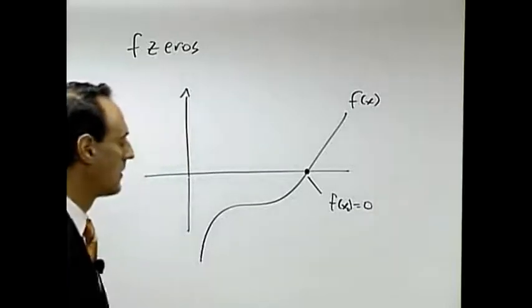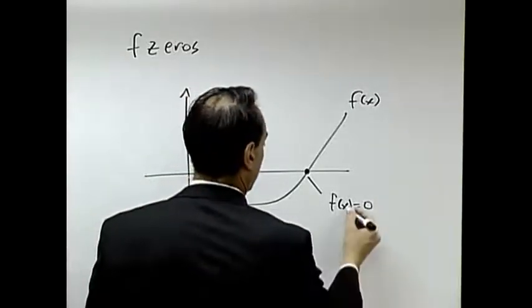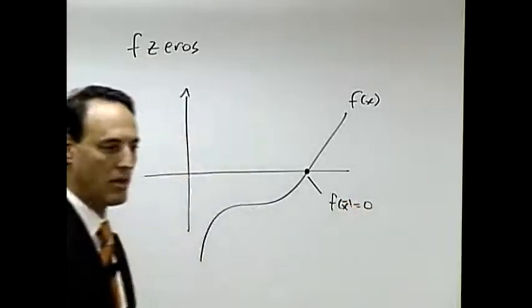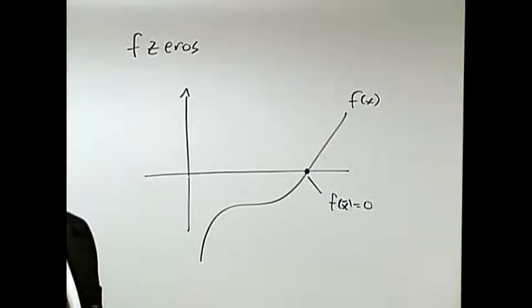There's an x bar where that's zero, and how do you find that? If it's a complicated function, oftentimes you're not going to be able to write down the solution. So what you're going to have to do is find a numerical way to find this, and this is why I had you do a little practice problem with this, but Newton's method says, okay, guess the solution.